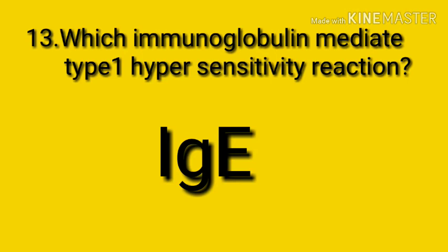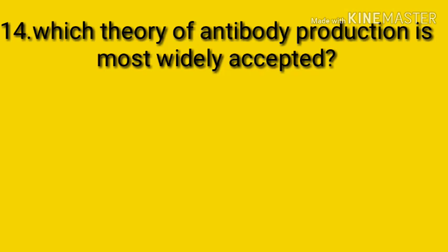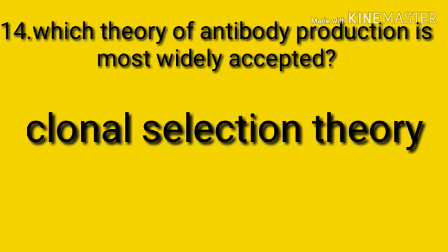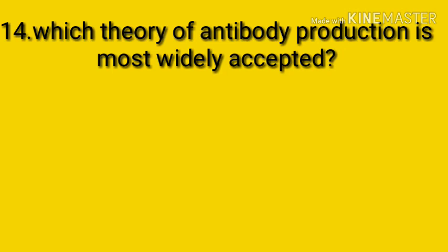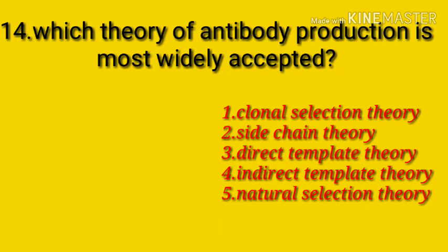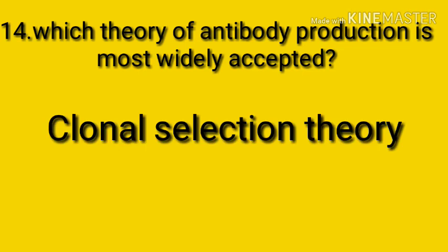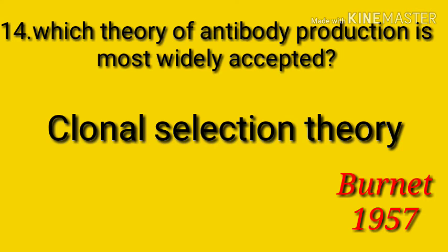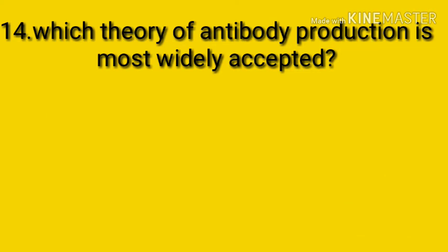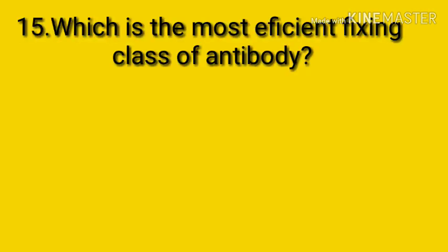Question number fourteen: which theory of antibody production is most widely accepted? The answer is the clonal selection theory. There are five theories proposed for antibody production: side chain theory, clonal selection theory, direct template theory, indirect template theory, and natural selection theory. The most accepted is the clonal selection theory, proposed by Burnet in 1957.